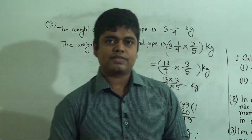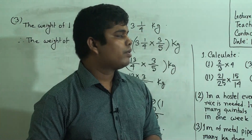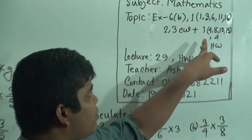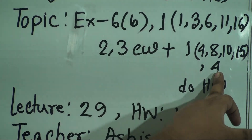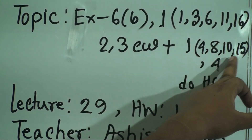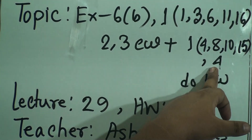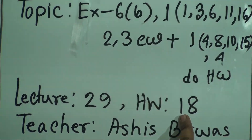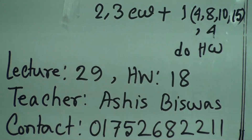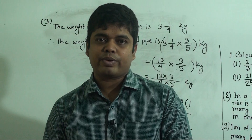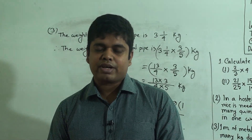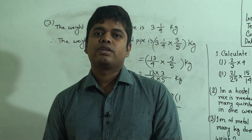The weight of 3/5 meter of metal pipe is 1 and 19/20 kg. I hope you have understood. This is your today's CW. For your SW, from question number 1 you must solve numbers 4, 8, 10, and 15, and word problem number 4. This is SW number 18. You must do your assigned SW in your SW copy and submit it regularly at our school campus every Saturday between 9 AM and 3 PM. Keep practicing at home. See you soon. Assalamu alaikum.